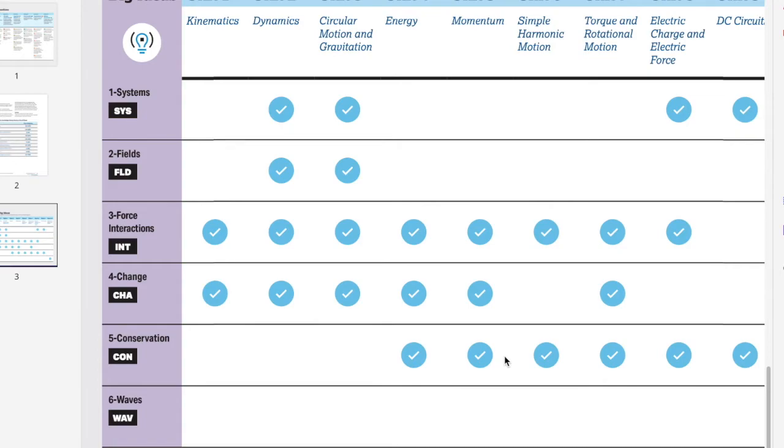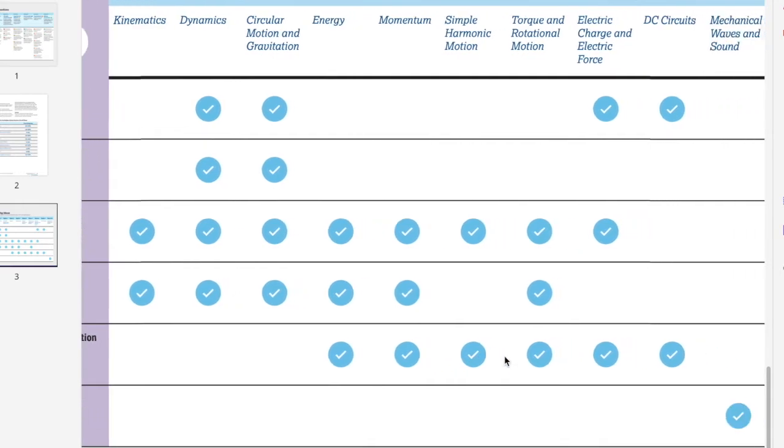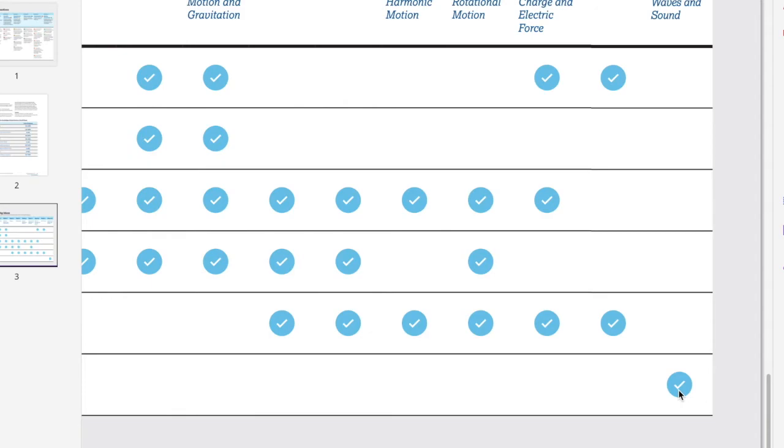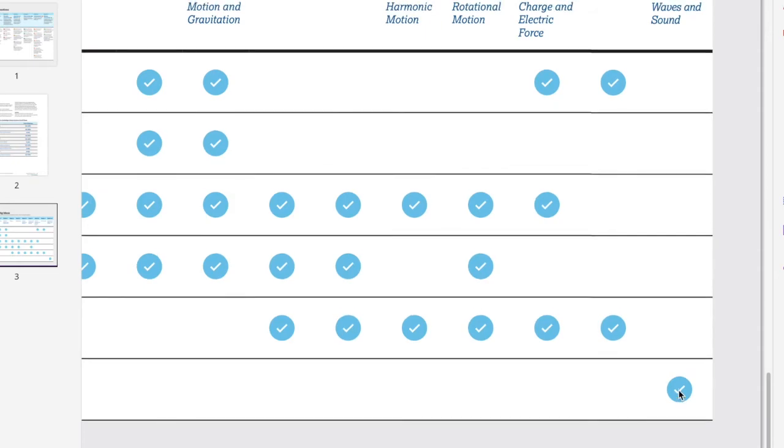On the AP test, when we're making arguments, we'll often want to reference a conservation law to say, hey, this is why this happens because momentum is always conserved. So we'll learn about that. Finally, the last big idea we'll just touch on it in our last unit is going to be waves. Waves are another very important idea in physics because it is how energy is able to move through the universe. And so even though we're barely going to touch it, it is a colossal idea in physics. And so we're just going to get to kind of brush the top of it.